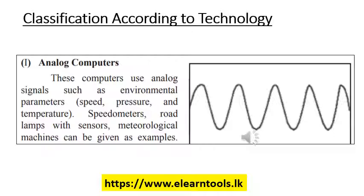The first classification by technology is analog computers. These computers use analog signals such as environmental parameters like speed, pressure and temperature. Speedometers, road lamps with sensors, and meteorological machines can be given as examples. You have been shown a signal of an analog wave.